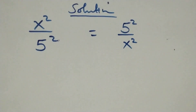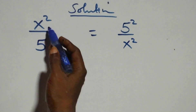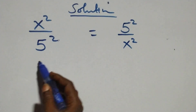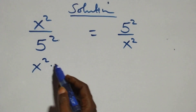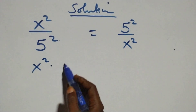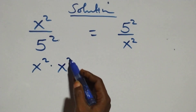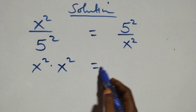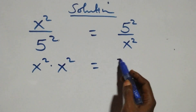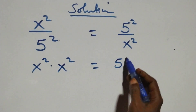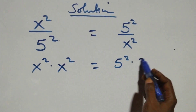Then the next step here, we cross multiply: x squared times x squared equals to 5 squared times 5 squared.